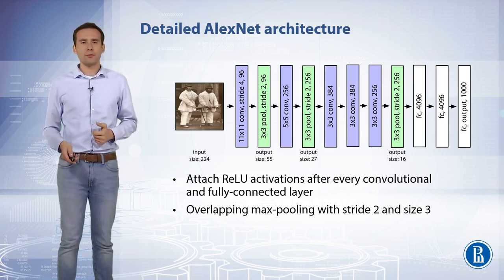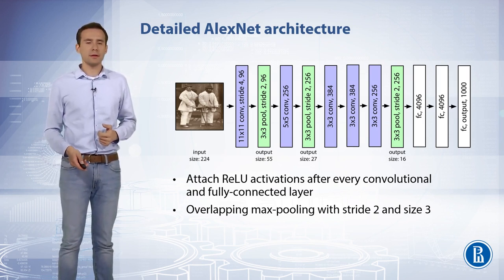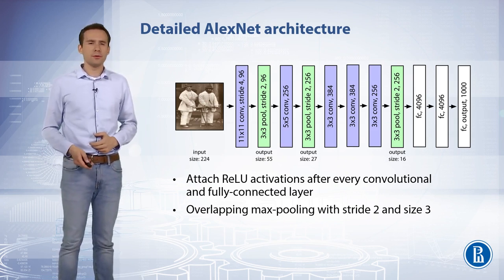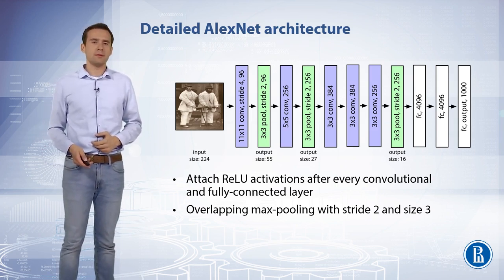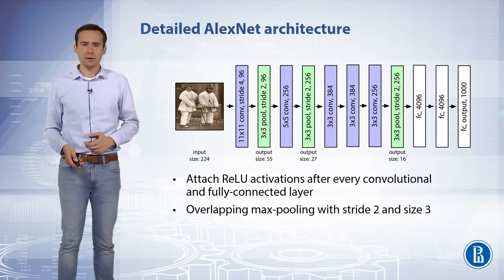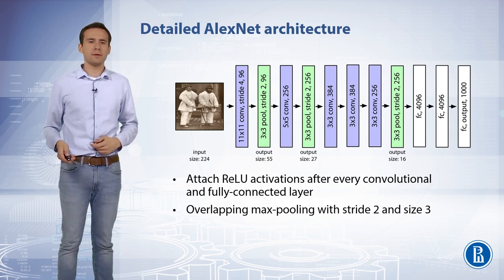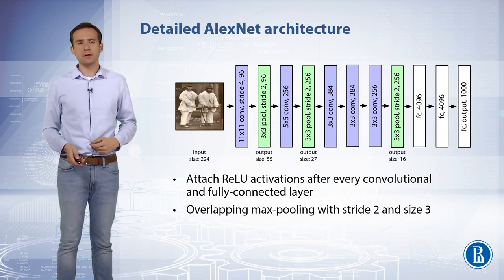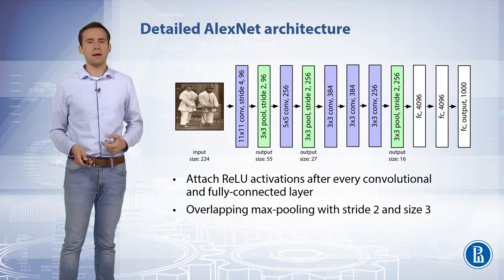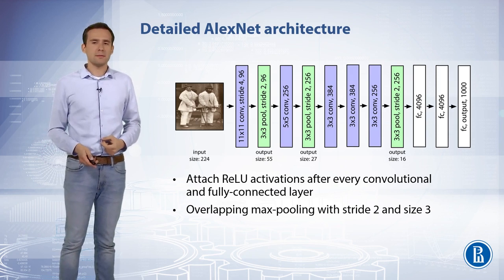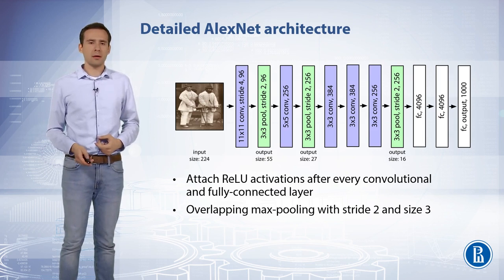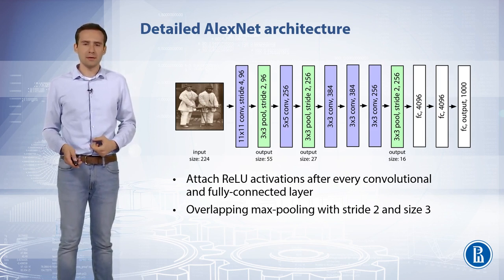The third, fourth, and fifth convolutional layers are connected to one another without any intervening pooling or normalization layers. The third convolutional layer has 384 kernels of size 3x3x256, the fourth has 384 kernels of size 3x3x192, and the fifth has 256 kernels of size 3x3x192. The fully connected layers have 4096 neurons each. All layers in the network are equipped with rectified linear unit non-linearity.